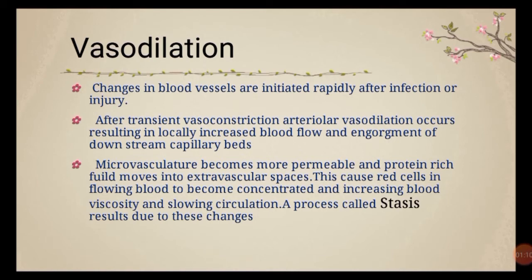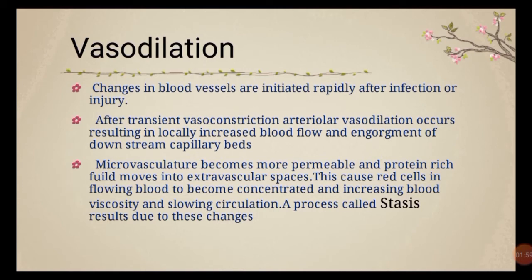The microvasculature becomes more permeable and protein-rich fluid moves into the extravascular spaces — this leads to edema, the second component of vascular changes. The red cells in the flowing blood become more concentrated, increasing blood viscosity and slowing circulation. This process is called stasis. With stasis, margination occurs: white blood cells, being heavier, move to the periphery and begin attaching to the vessel wall.